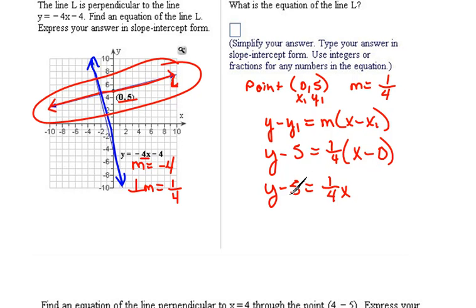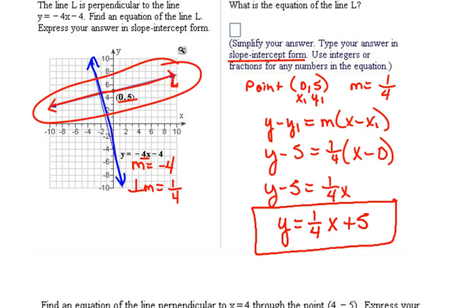Now, to get it into slope intercept form, which is what they wanted their answer in, we have to move our 5 over. Adding 5 to both sides, we get y equals 1 fourth x plus 5. This is the equation of line L, which is perpendicular to this line because they have opposite sign reciprocal slopes.